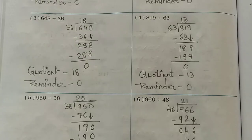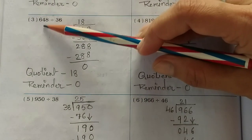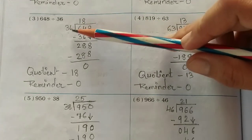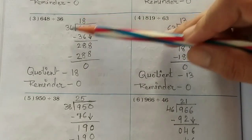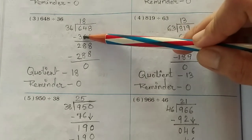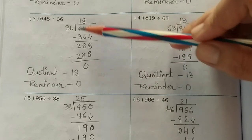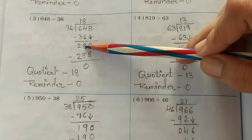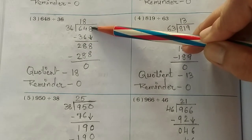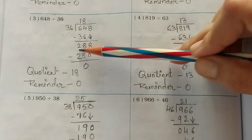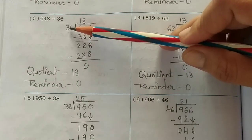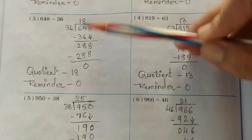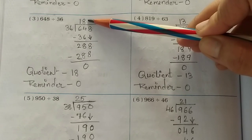Now see the third number: 648 divided by 36. 36 one is 36 — we take one because 36 twos would be more than 64. Subtract 36 from 64 and you get 28. Bring down the 8 to get 288. 36 eights are 288, so zero remainder and the answer is 18. Write it here.